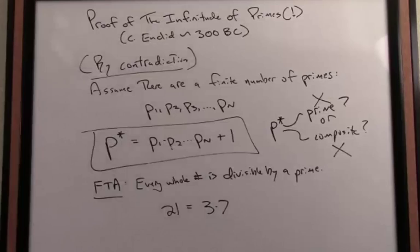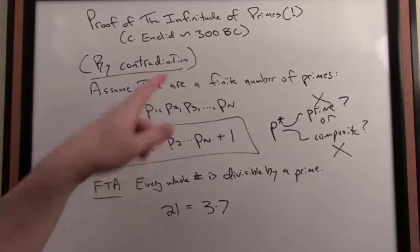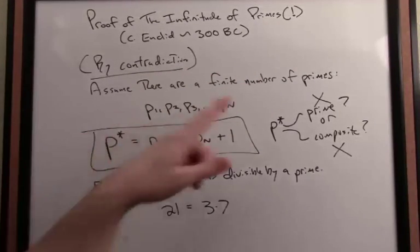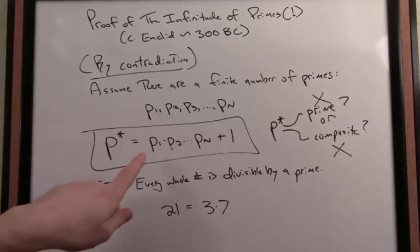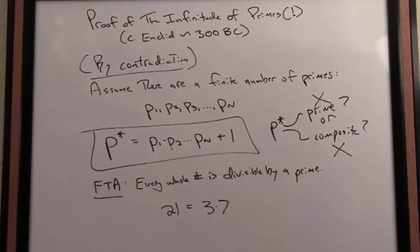So what does this all mean? Let's tie it together. We've assumed, by contradiction, there are a finite number of primes. I can enumerate all those primes. We then construct a new number, call it P*, which is defined as the product of all those primes plus one.